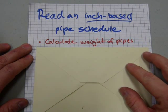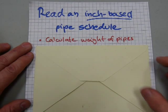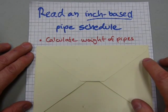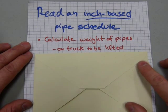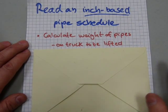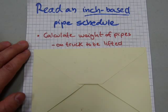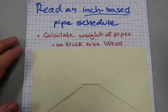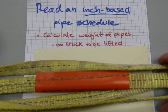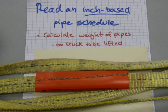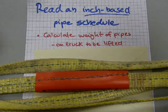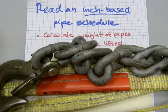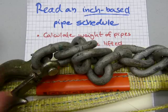Why would we need a pipe schedule? First, you need to calculate the weight of pipes. The pipes might be on a truck or in a crate and they are to be lifted. Before they are lifted you need to rig them up for overhead hoisting, and before you do that you need to know how much they weigh — whether light-duty web slings or heavy-duty chains will do the job.